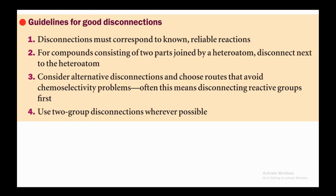Summary of guidelines for good disconnections: (1) Disconnections must correspond to known reliable reactions. (2) For compounds with two parts joined by a heteroatom, disconnect next to the heteroatom. (3) Consider alternative disconnections and choose routes that avoid chemoselectivity problems — often disconnect reactive groups first. (4) Use two-group disconnections where possible.